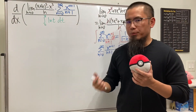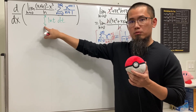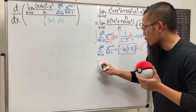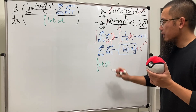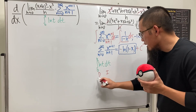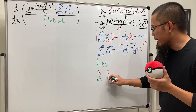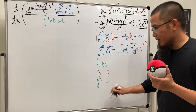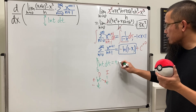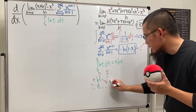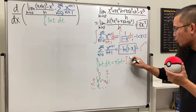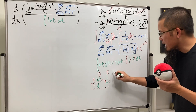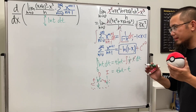Now for the integral. This is technically an improper integral because ln(0) is undefined — that's a vertical asymptote — but it converges. We have the integral from 0 to x of ln(t) dt. Integrating by parts: let u = ln(t) and dv = dt. Differentiating ln(t) gives 1/t; integrating 1 gives t. So the first part is t·ln(t), minus the integral of (1/t)·t dt.